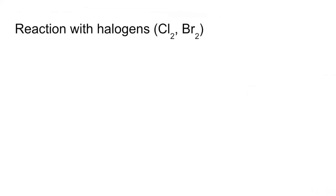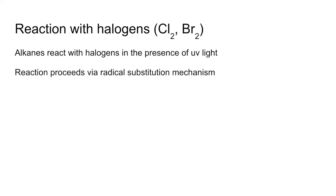Moving on now to the reaction with halogens, so chlorine, bromine for example. Alkanes react with halogens but only in the presence of UV light. They're unreactive because of their very strong non-polar bonds. The reaction proceeds via a radical substitution mechanism. I'm going to go through the mechanism on the next slide.